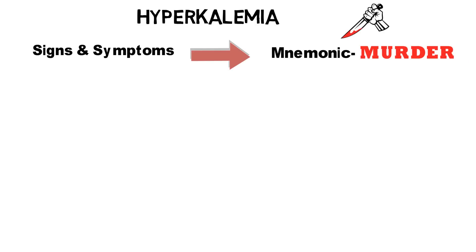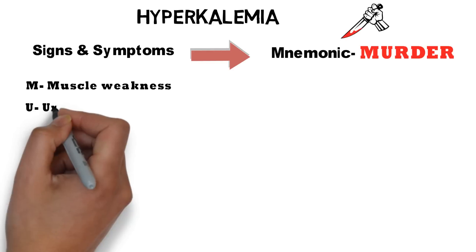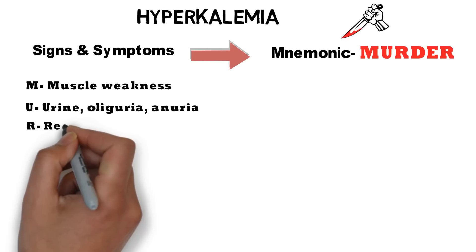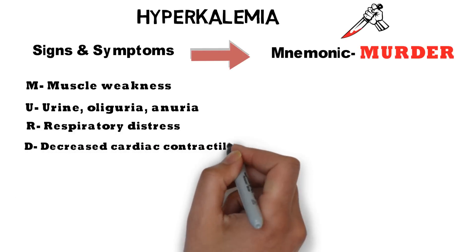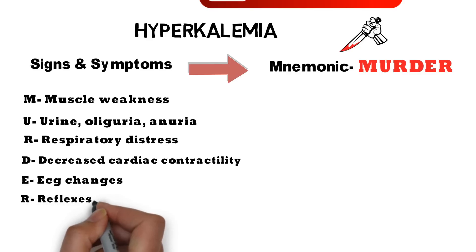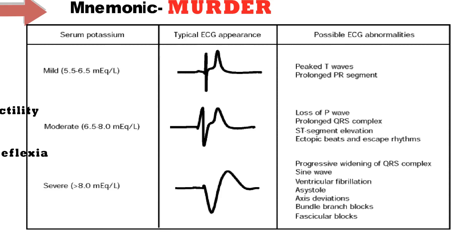Whenever you make a mnemonic, do make an image or a story of that mnemonic. When you do so, you retain things and facts for a longer time. Now, for the mnemonic MURDER: M stands for muscle weakness, U for urine — can be oliguria or anuria, R for respiratory distress, D for decreased cardiac contractility, E for ECG changes, R for reflexes — can be hyperreflexia or areflexia.